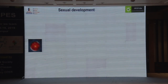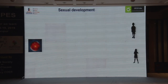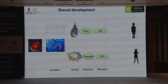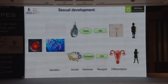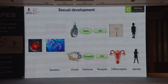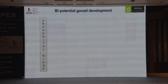When we talk about sexual development, we all know that we start from a single cell and everybody is the same, and then finally we have gender dimorphism. This involves an interplay of genetics, gonads, hormones, receptors, and differentiation. Problems can happen at any level: genetic level, gonad formation, hormone formation, hormone action, and finally differentiation. This is what DSD is.